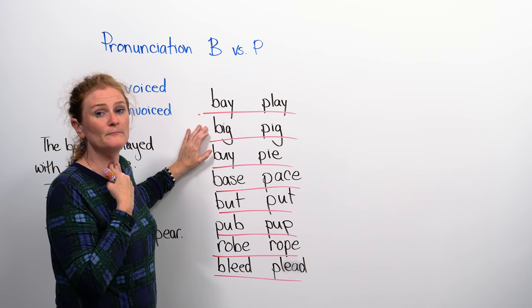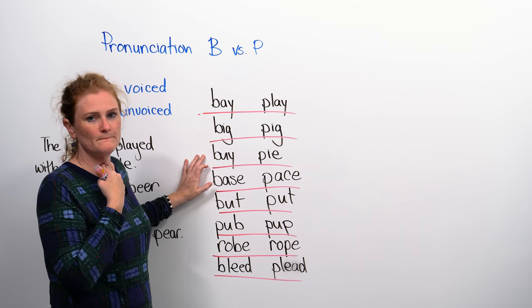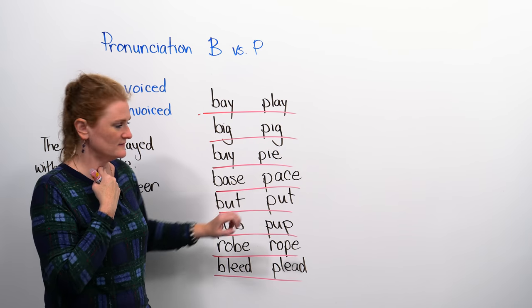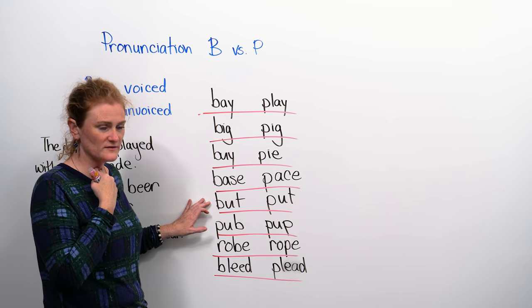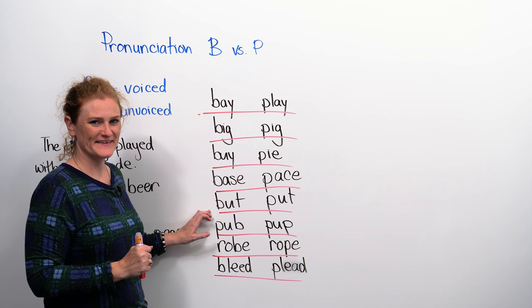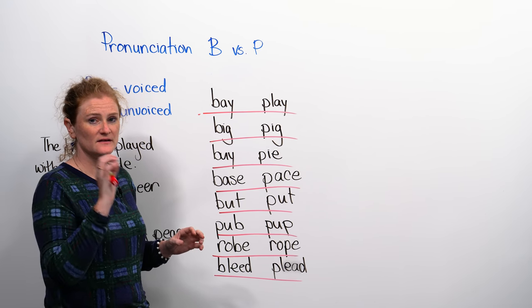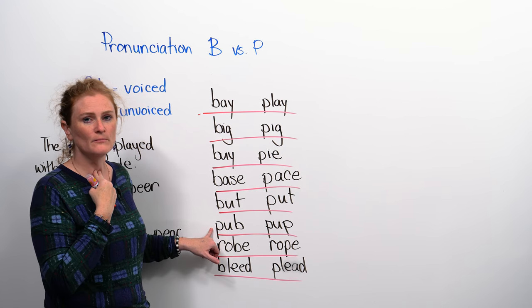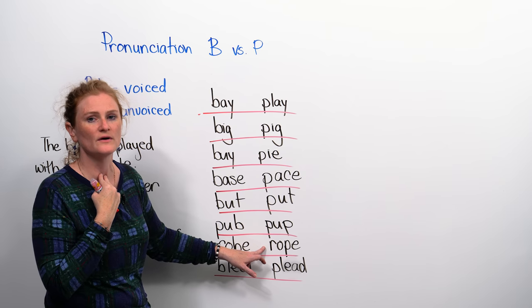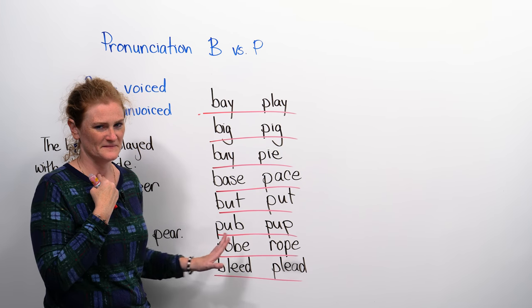The next pair are b-b-big and p-p-p-p-pig. Big, pig. Buy, pie. Base, pace. Butt, put. I'll let you practice those. When we have the sound at the end of the word, it's the same idea. You just have to make sure you vibrate. So we have pub and pup, robe, rope. At the beginning again, we have bleed and plead. You try now.